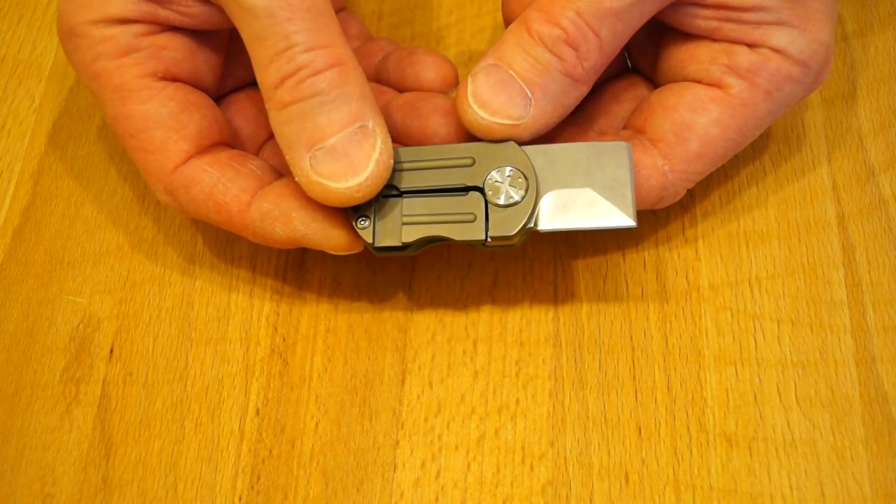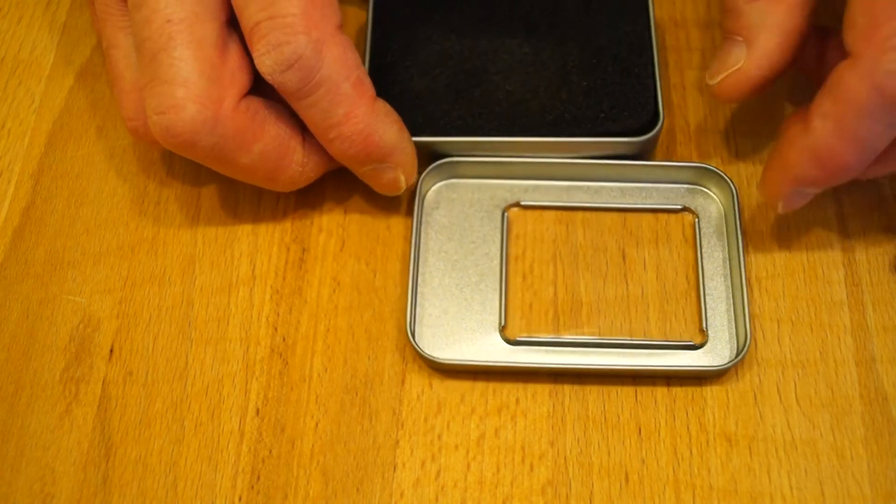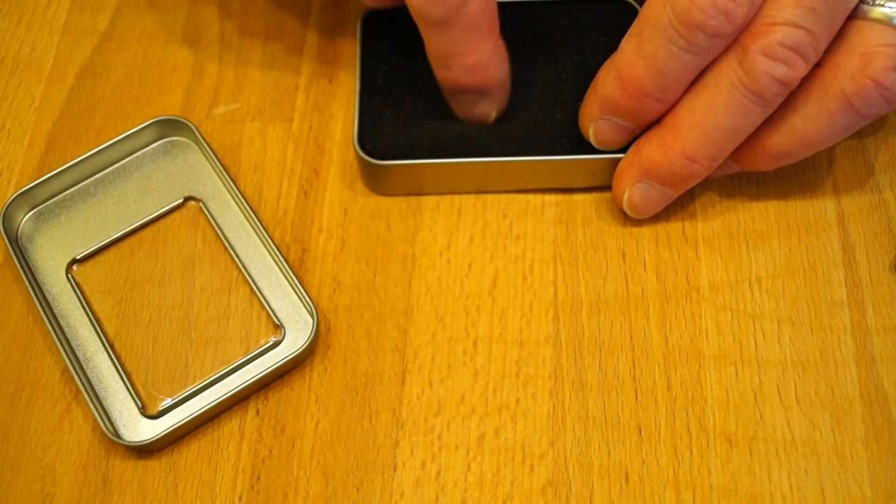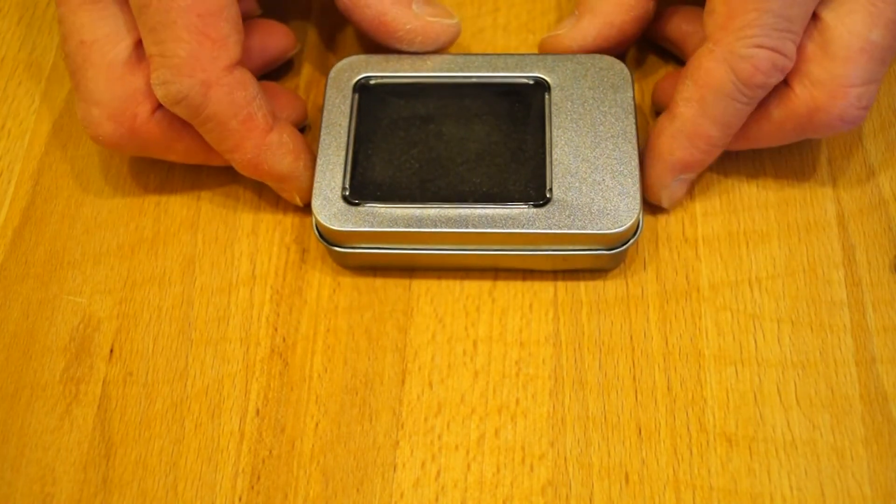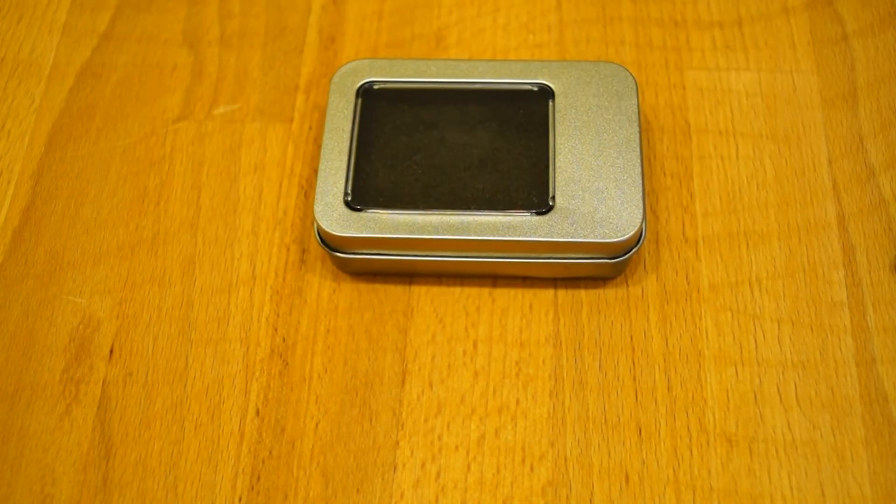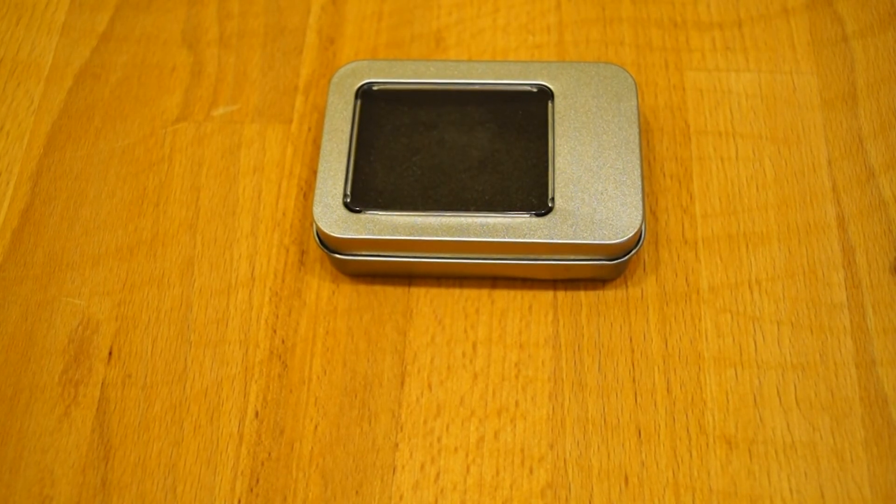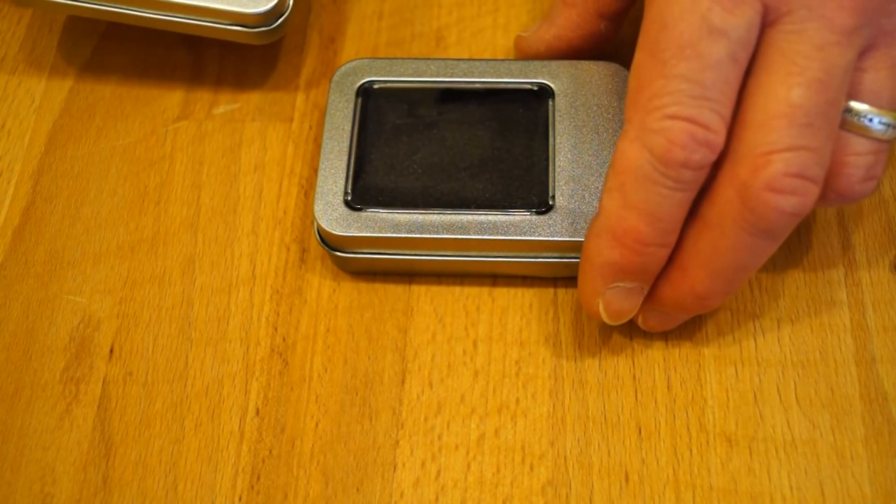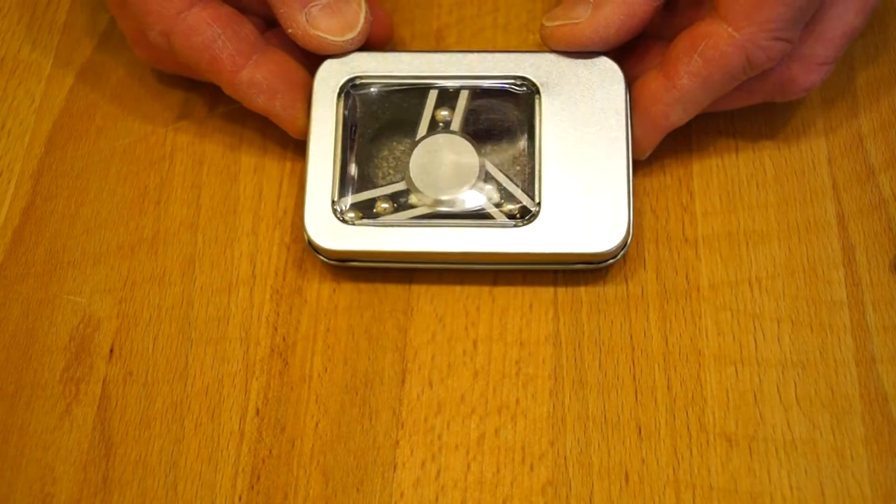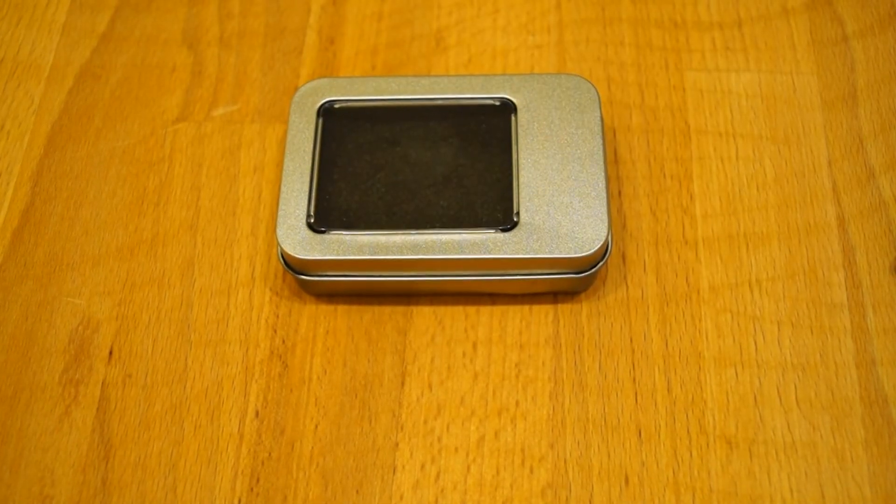It comes in a nice little tin box wherever that's gone to. Here it is. It comes in this little tin box, nicely padded. Funnily enough, it's the same tin as I've had some of my spinners in. Because when I first opened the package, I wondered what it was. I thought, wait a minute, they haven't sent me the knife at all. But, you can see, look, it's the same tin. Exactly. Let's get that back on the shelf again.